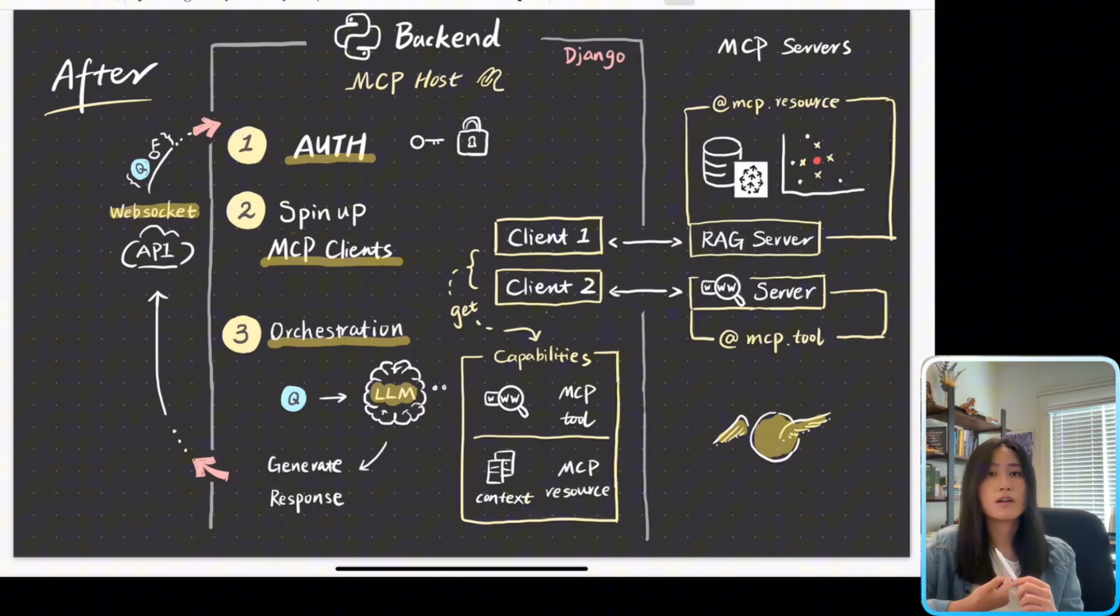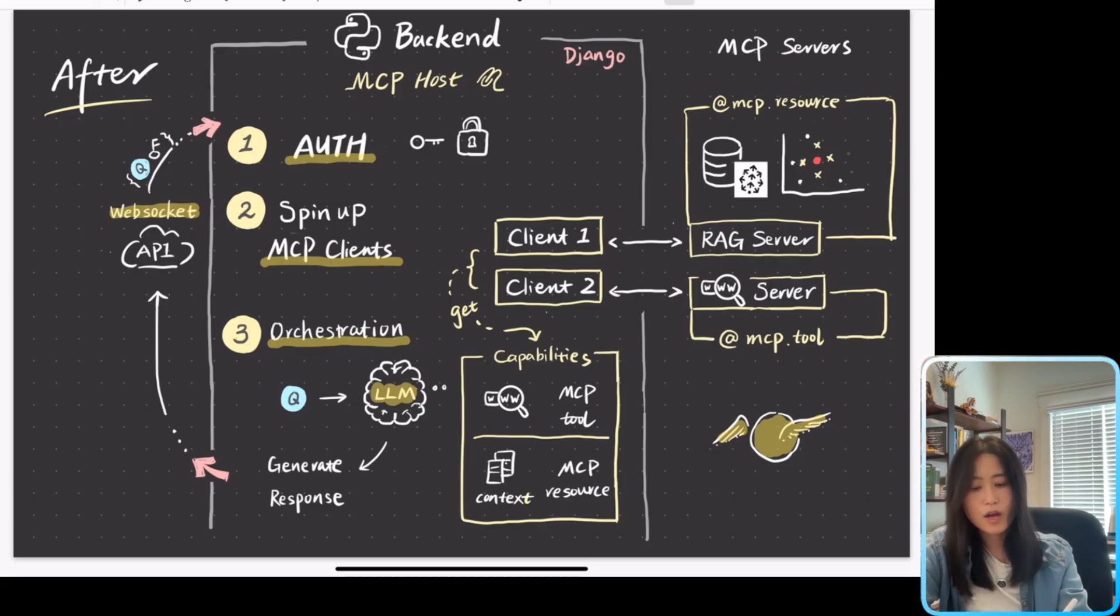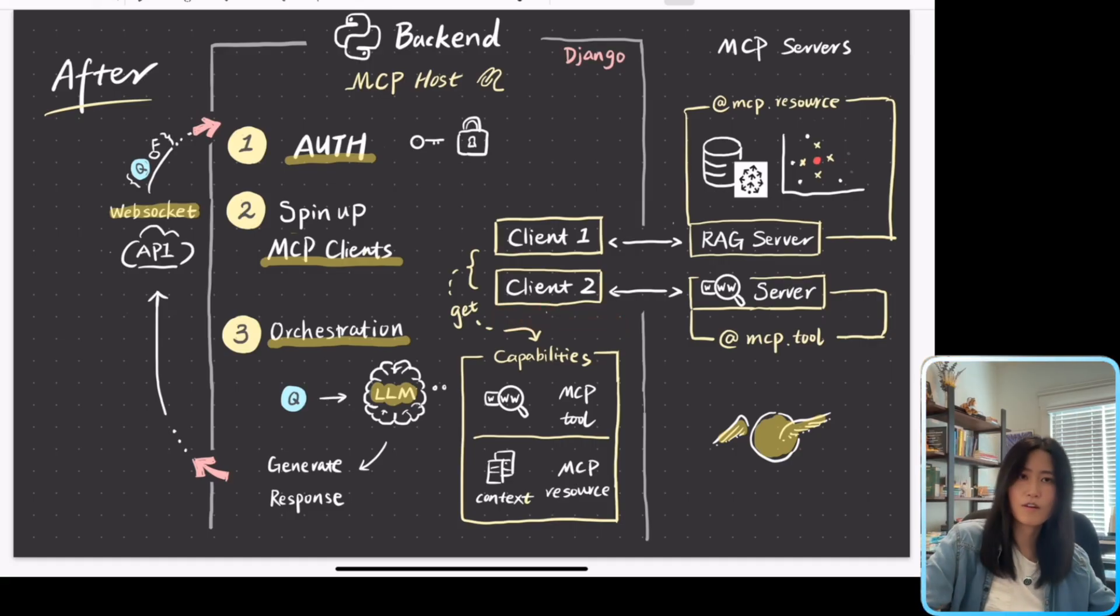Because remember the large language model is not going to directly talk to MCP servers, but rather it's going to talk to the MCP client. And then the client is going to talk to the server and get the list of capabilities. You know, it's the kind of, I know a friend knows a friend, that kind of connection relationship.